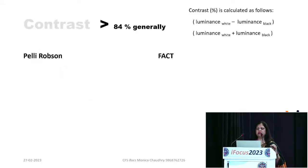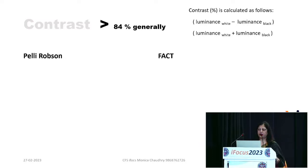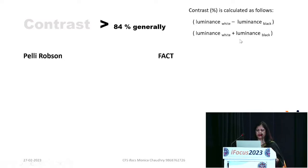Another important factor is contrast, which should always be assessed. All standard charts have at least 84–95% contrast. Contrast is calculated using the formula: (luminance white − luminance black) divided by (luminance white + luminance black).